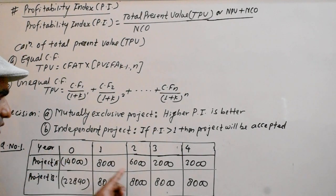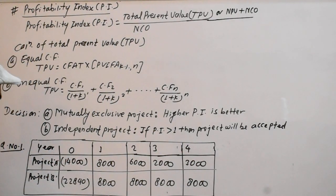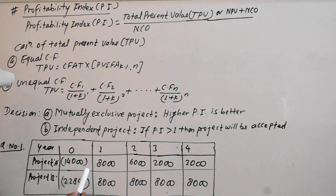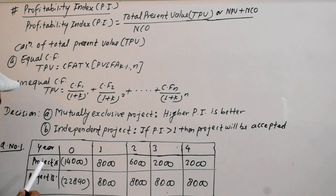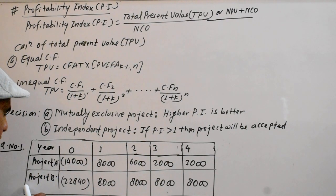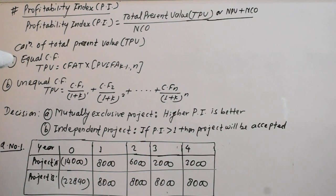Just go to a 4-year project. Project A has a cash flow with an investment of 14,000, and Project B has a cash flow with an investment of 22,840.